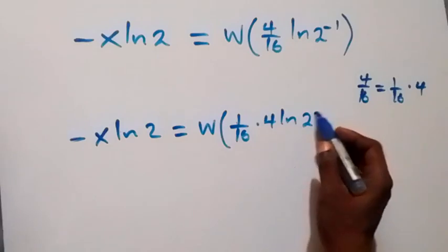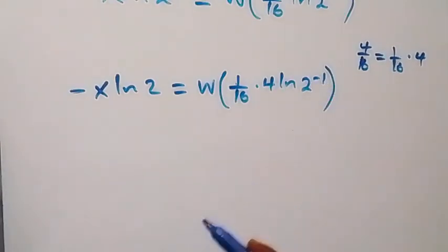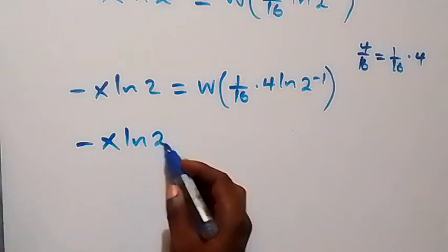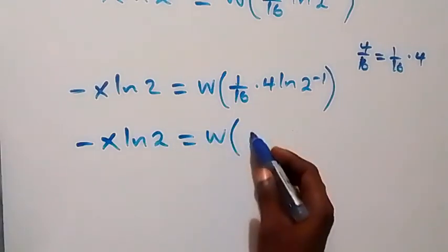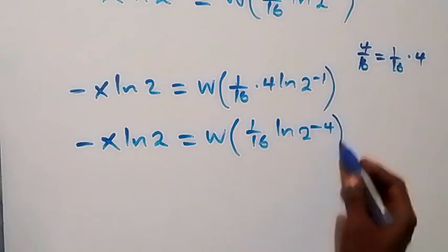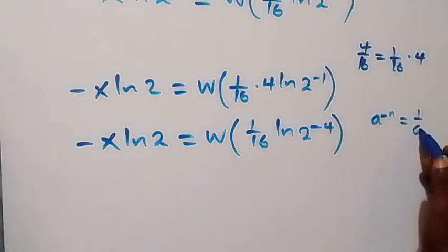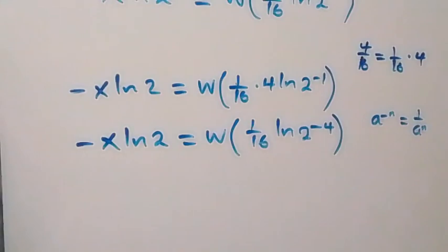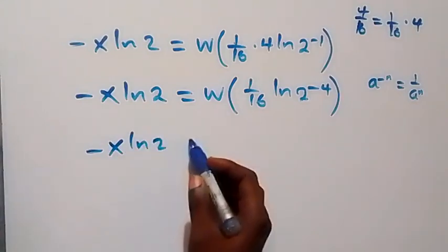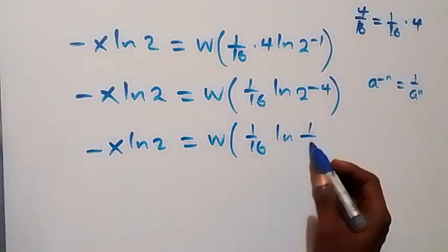Here ln2 raised to power minus 1, and we reverse the power law of logarithm — the 4 can come up as the power — giving us minus x·ln2 equals W(1 over 16 · ln2 raised to power minus 4). Then using a raised to power minus n equals 1 over a raised to power n, we write this as minus x·ln2 equals W(1 over 16 · ln(1 over 2) raised to power 4).